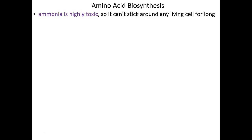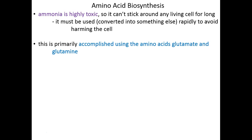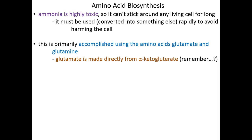For amino acid biosynthesis, we have as our only nitrogen contributor, ammonia — the ammonia we just made in plants through nitrogen fixation. But that ammonia is highly toxic, so as soon as it's taken up by a plant or even by a person or any living cell, it really can't stick around as ammonia for very long. That ammonia has to be used very rapidly to avoid harming the cell. It needs to be converted into something non-toxic, some other nitrogen-containing molecule. This is primarily accomplished by using that ammonia to make the amino acids glutamate and glutamine — our entry points for ammonia into non-toxic nitrogen-containing compounds.